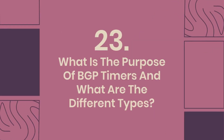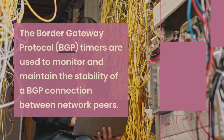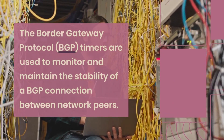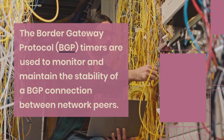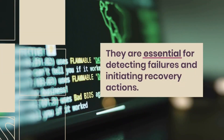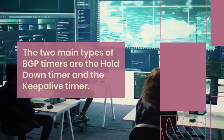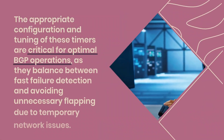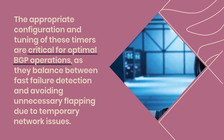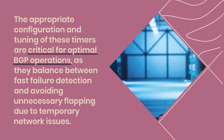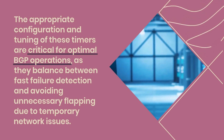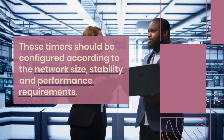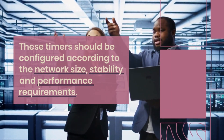What is the purpose of BGP timers and what are the different types? BGP timers are used to monitor and maintain the stability of a BGP connection between network peers, essential for detecting failures and initiating recovery actions. The two main types of BGP timers are the Hold Down Timer and the Keep Alive Timer. Appropriate configuration and tuning of these timers are critical for optimal BGP operations, balancing fast failure detection against avoiding unnecessary flapping due to temporary network issues. Timers should be configured according to network size, stability, and performance requirements.